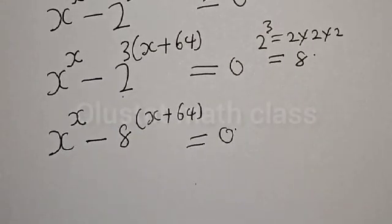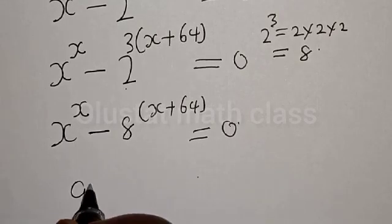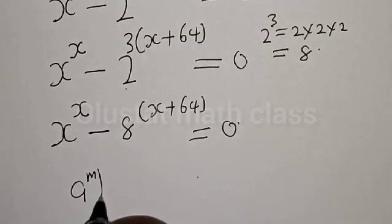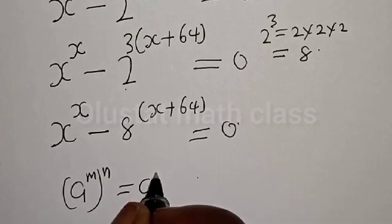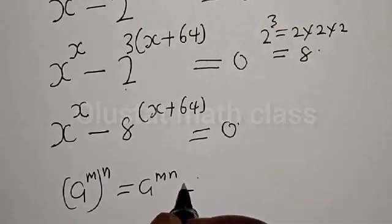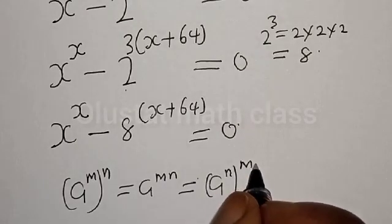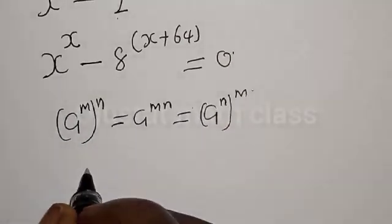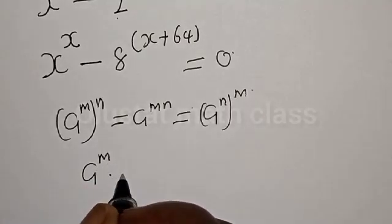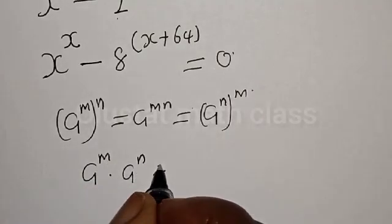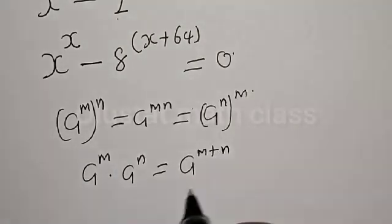Now remember, if you have a raised to power m raised to power n, that is the same as a raised to power m times n, which is equal to a raised to power n raised to power m. Also, if you have a raised to power m multiplied by a raised to power n, that is the same as a raised to power m plus n. We are going to make use of these rules here.